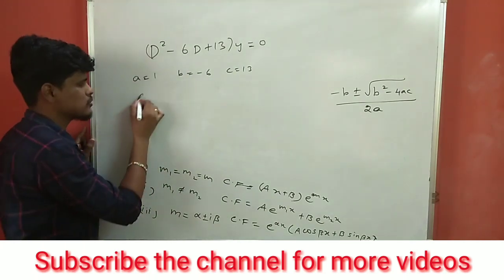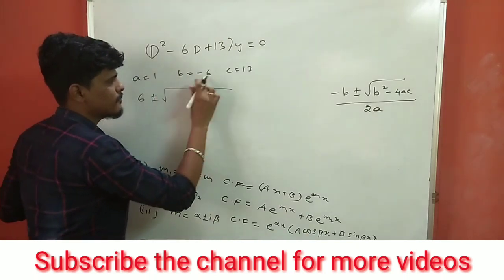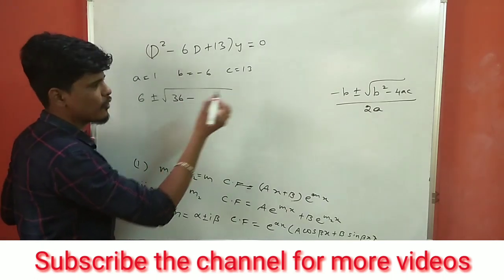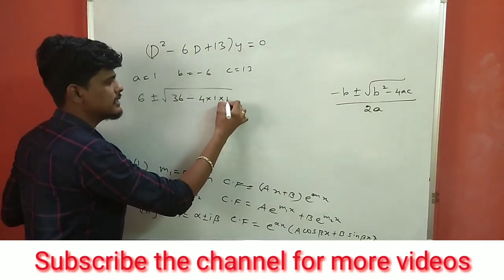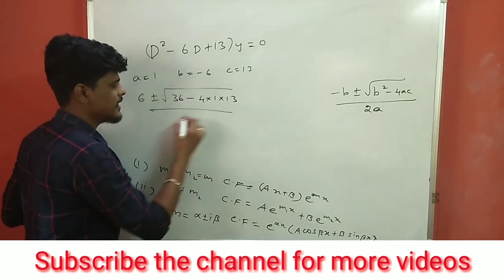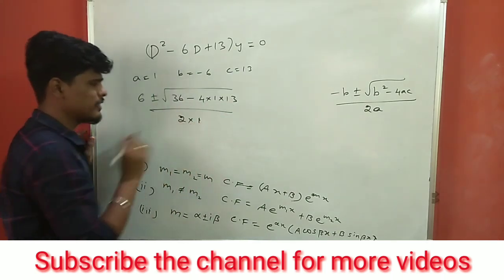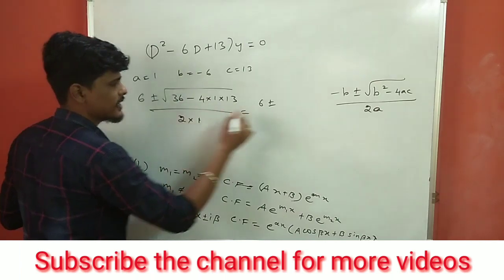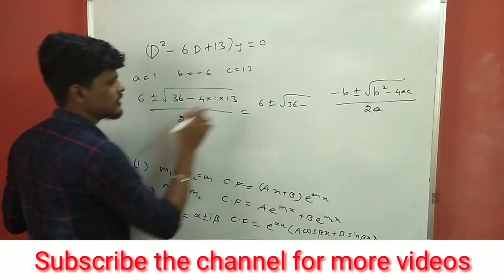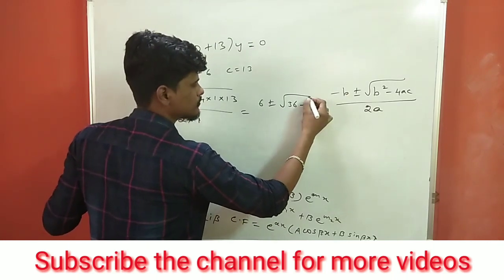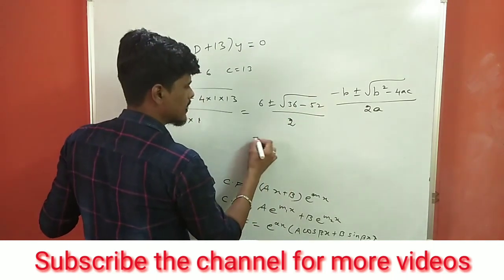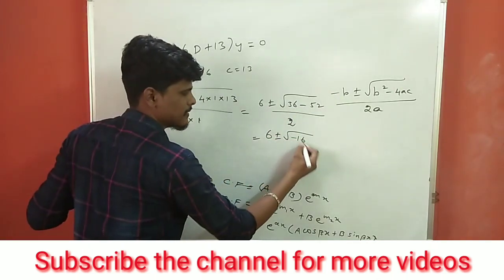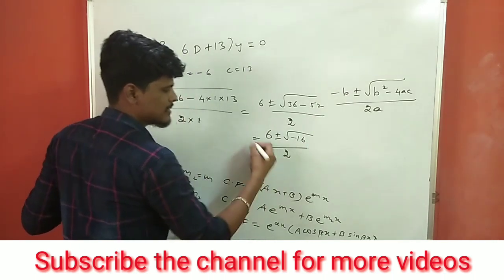Substituting into the formula: minus b is minus(−6) = +6, plus or minus root of b² = 36, minus 4ac = 4×1×13 = 52. So we get root of (36 − 52) = root of −16, divided by 2. Root of minus 16 gives an imaginary part — since root of 16 = 4, this becomes ±4i.